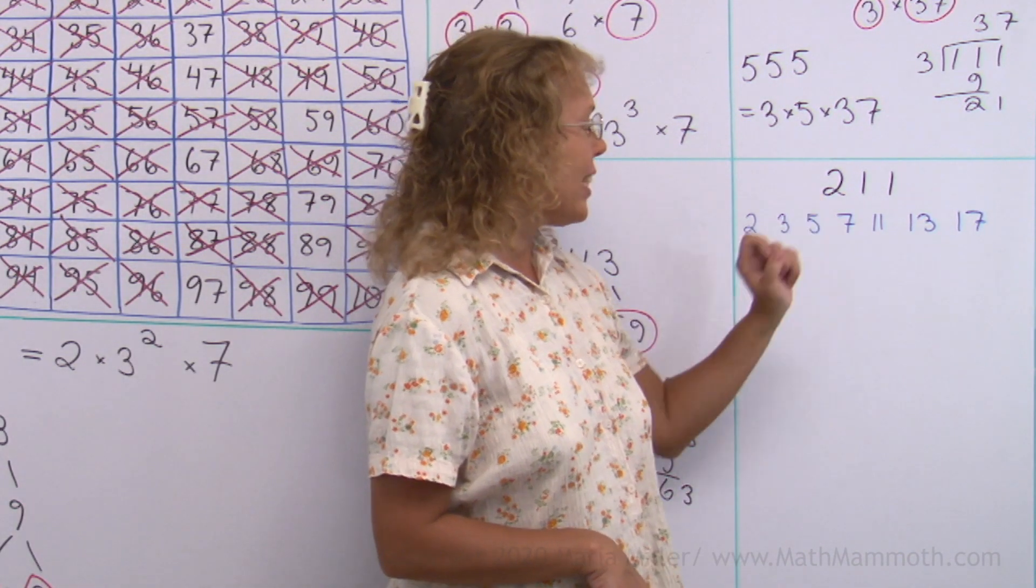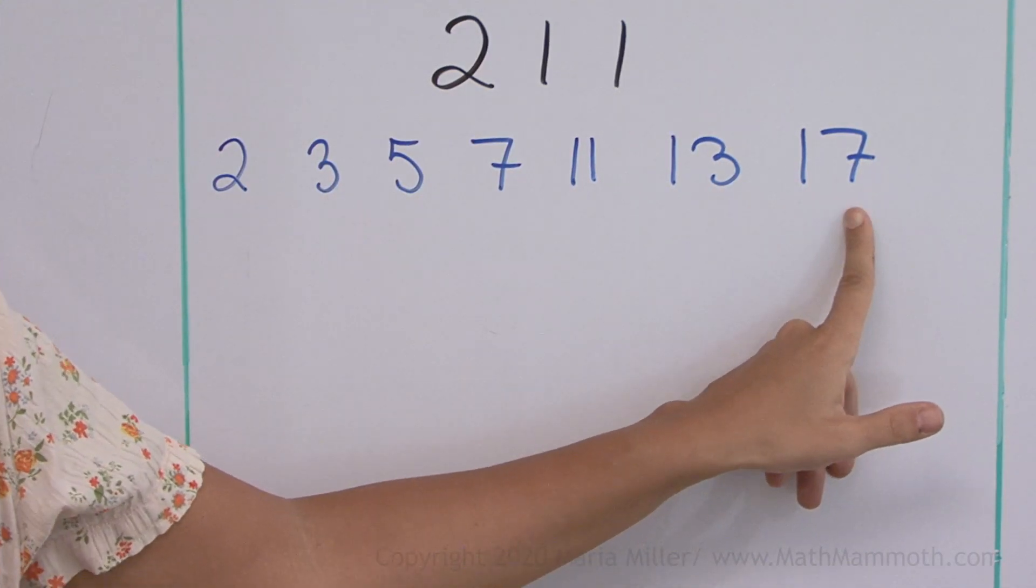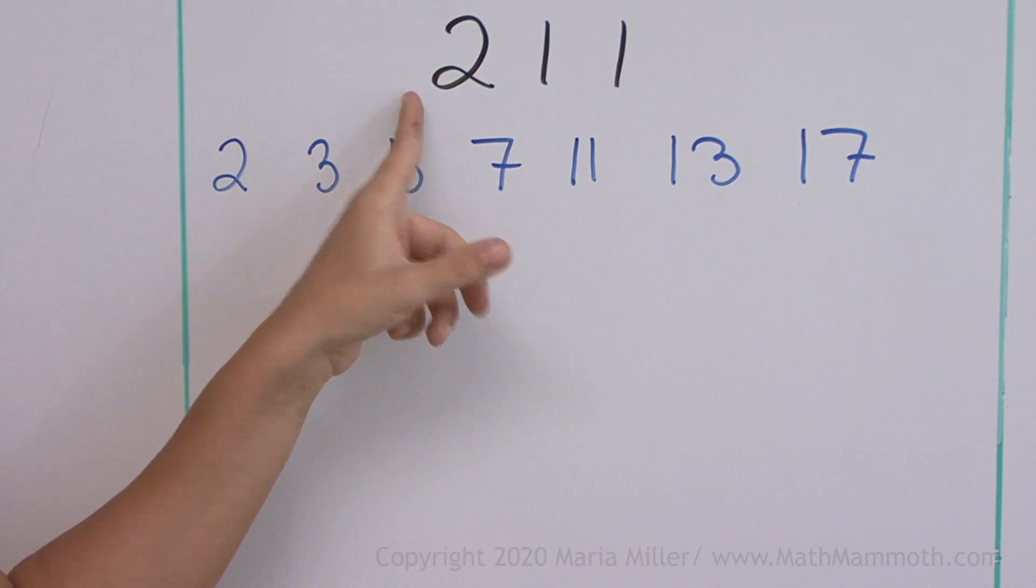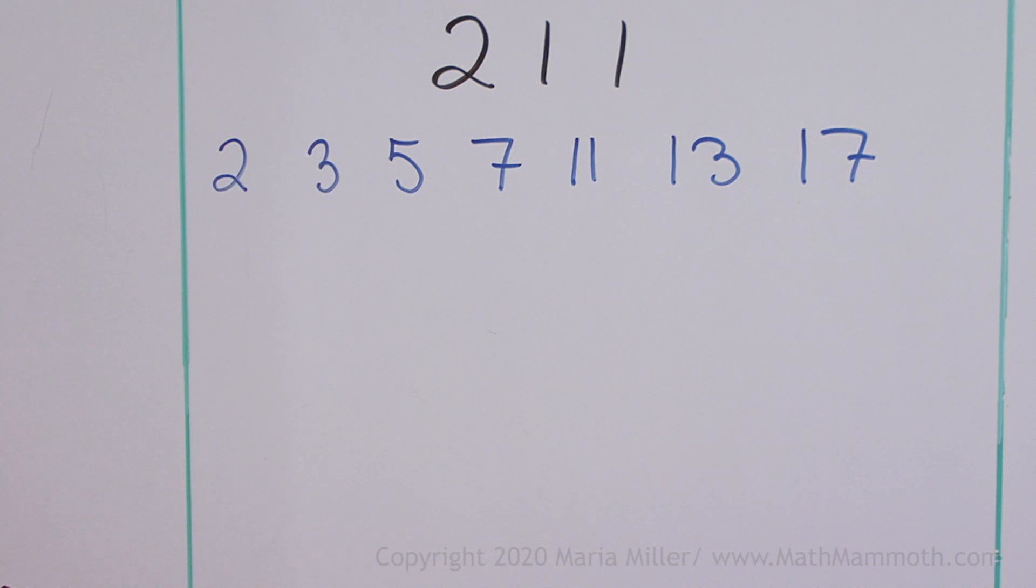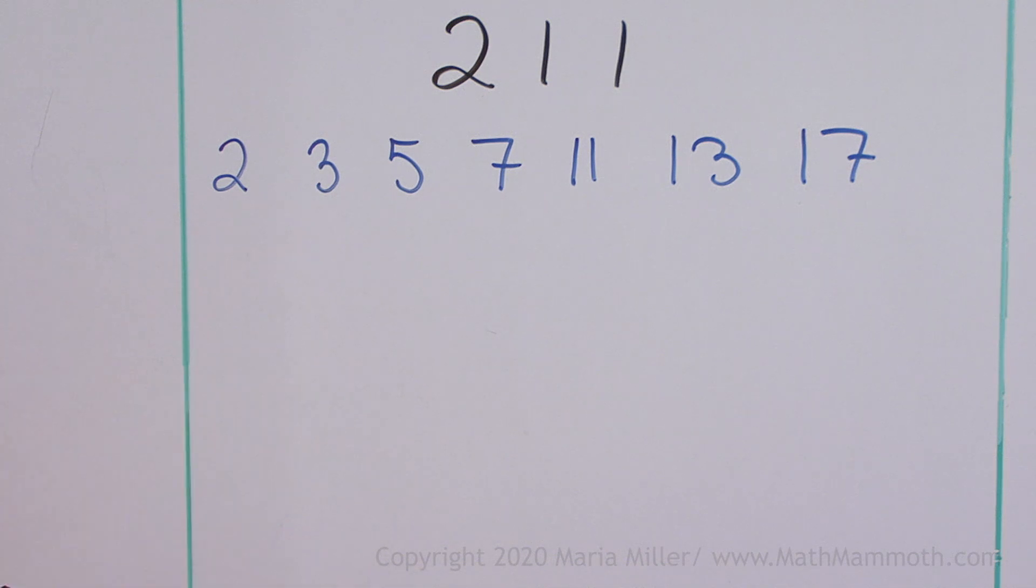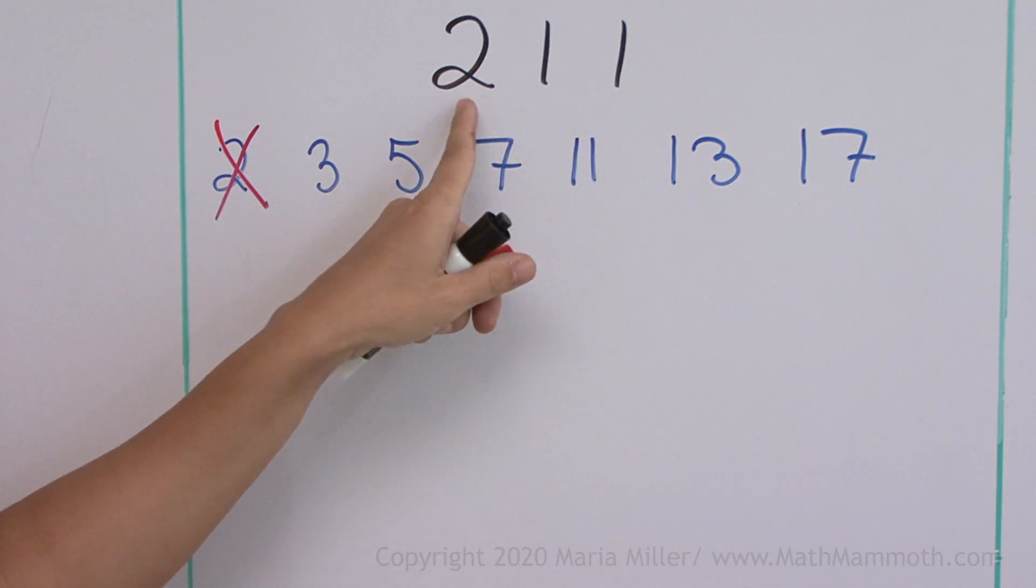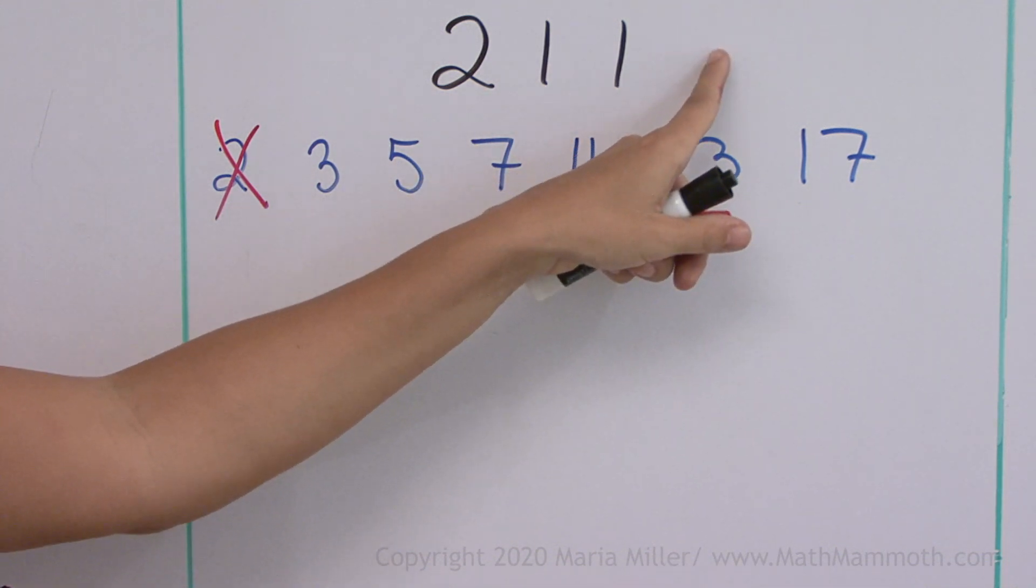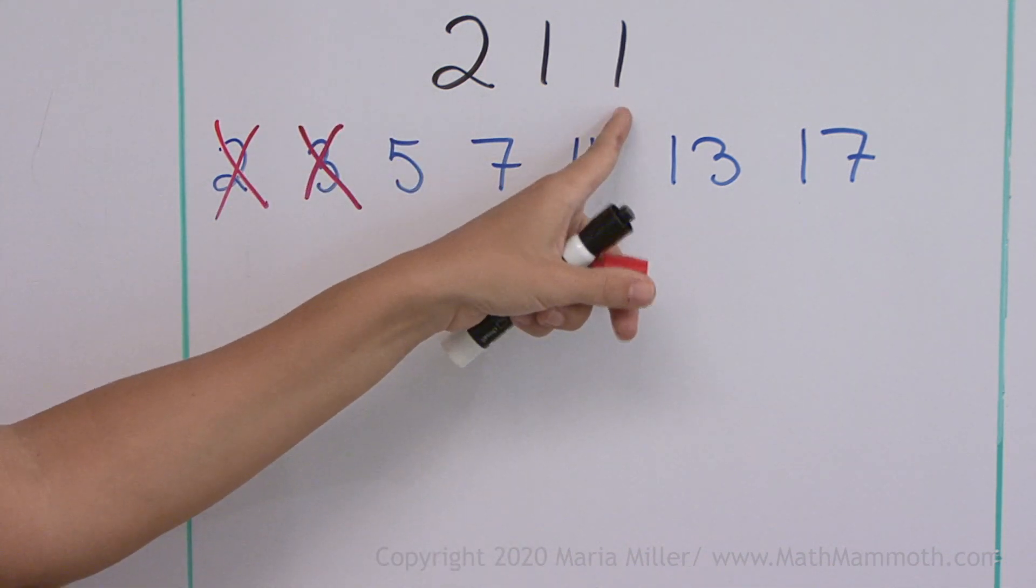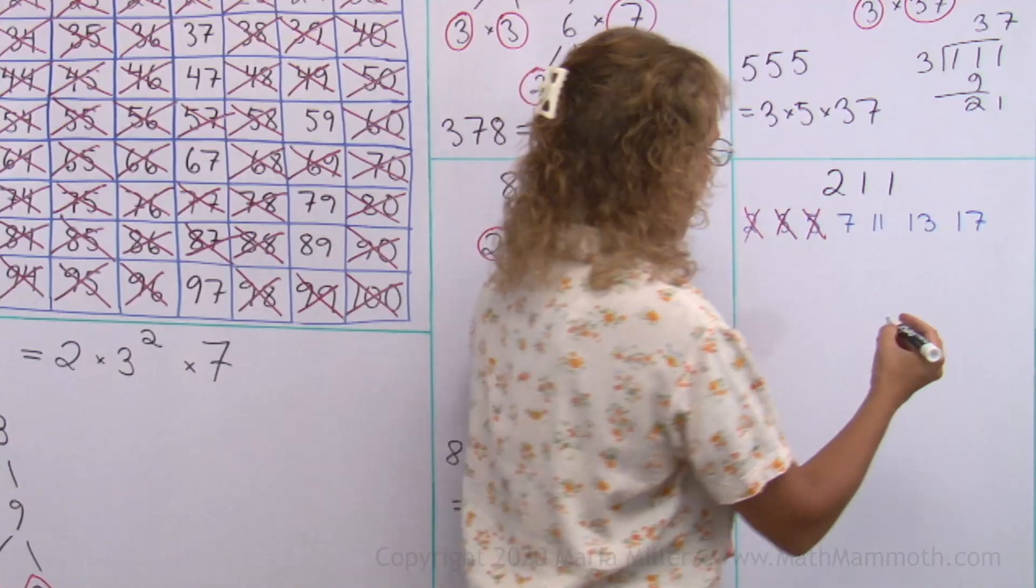Lastly, 211. I wrote here a list of primes, because that's the basic idea we are doing in factoring. If you cannot immediately notice that it's divisible by something, then you just start test dividing by all primes. It's not divisible by 2, obviously. Then by 3, add the digits. 2 plus 1 plus 1 is 4. 4 is not divisible by 3, so the number itself is not either. By 5, obviously not. It does not end in 0 or 5. By 7. Okay, we need to check it out and divide.